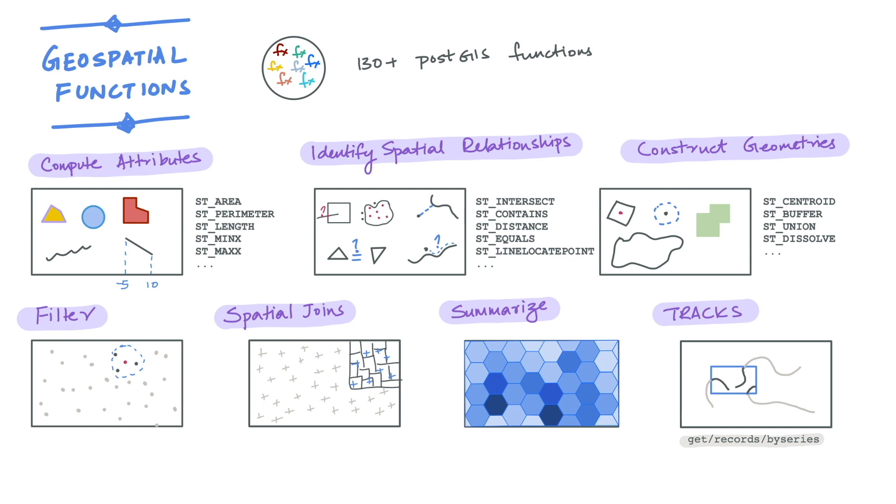If we want to update the view with the entirety of the track data, then we can use the update records by series endpoint. This endpoint, instead of retrieving the associated track data, will update the view itself.